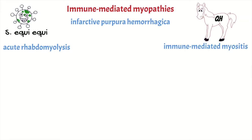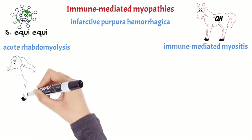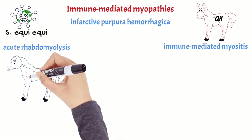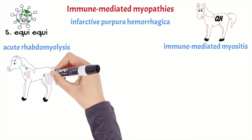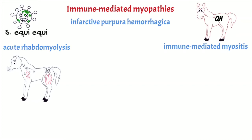Acute rhabdomyolysis is associated with acute infection with Streptococcus equi, which releases a lot of toxins and/or causes an excessive release of cytokines with consequent damage of muscle fibers. Clinical signs are those typical of strangles: respiratory signs and rhabdomyolysis.